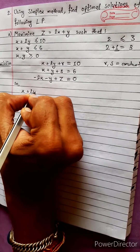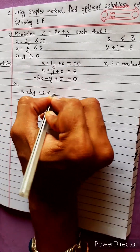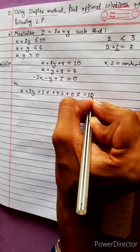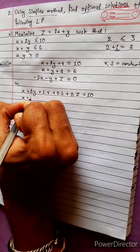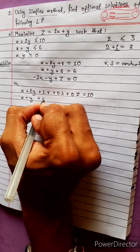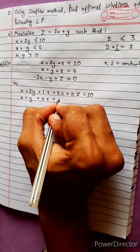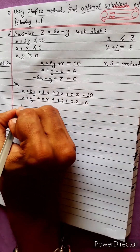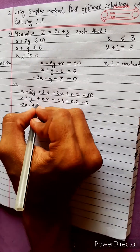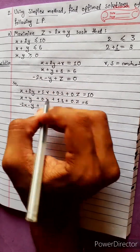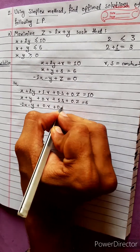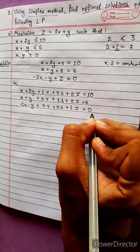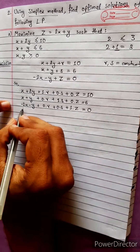Standard form: 2y plus 1r plus 0s plus 0z equals to 10. Then 0z equals to 6. Minus 2x minus y plus r, s: 0r, 0s, plus 1z equals to 0.